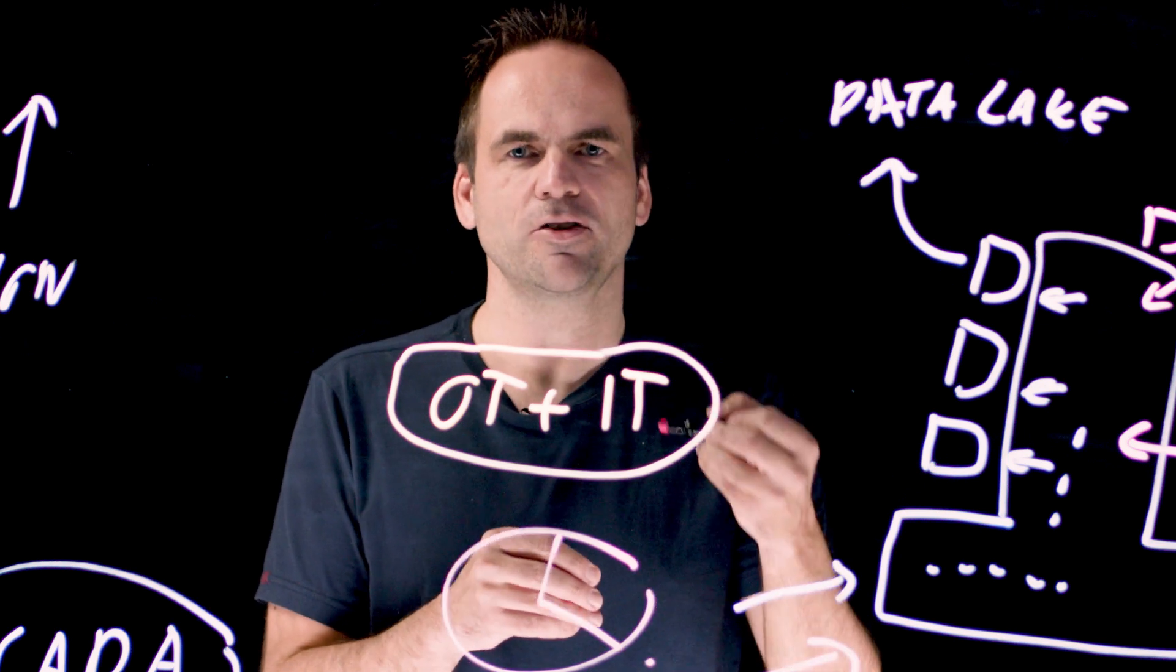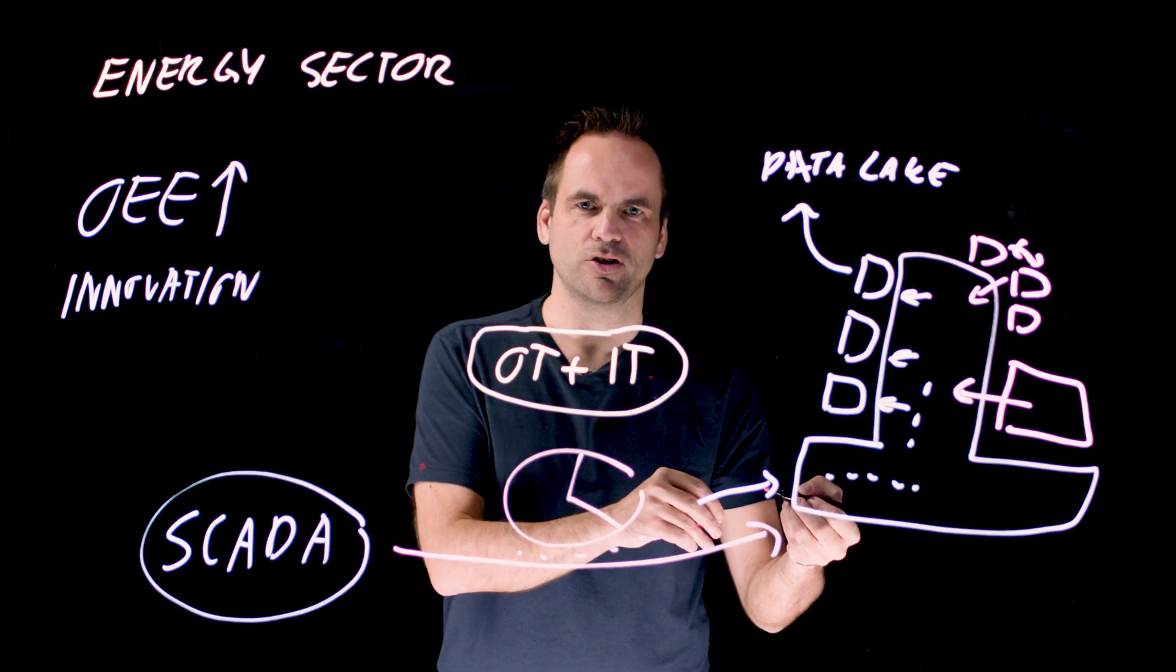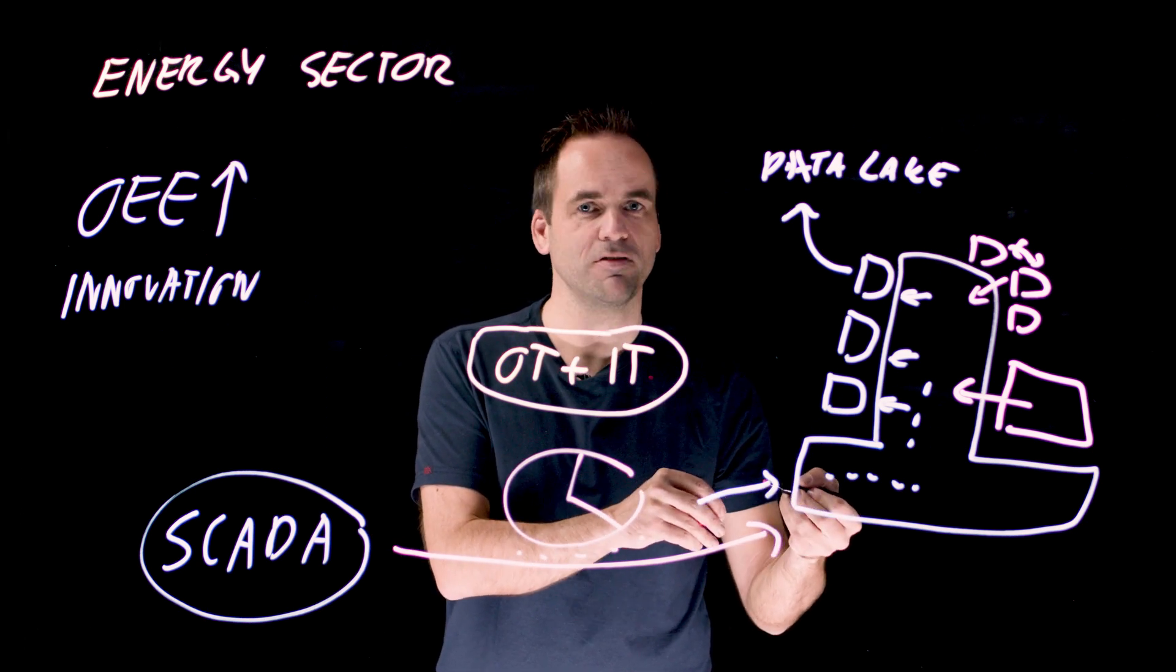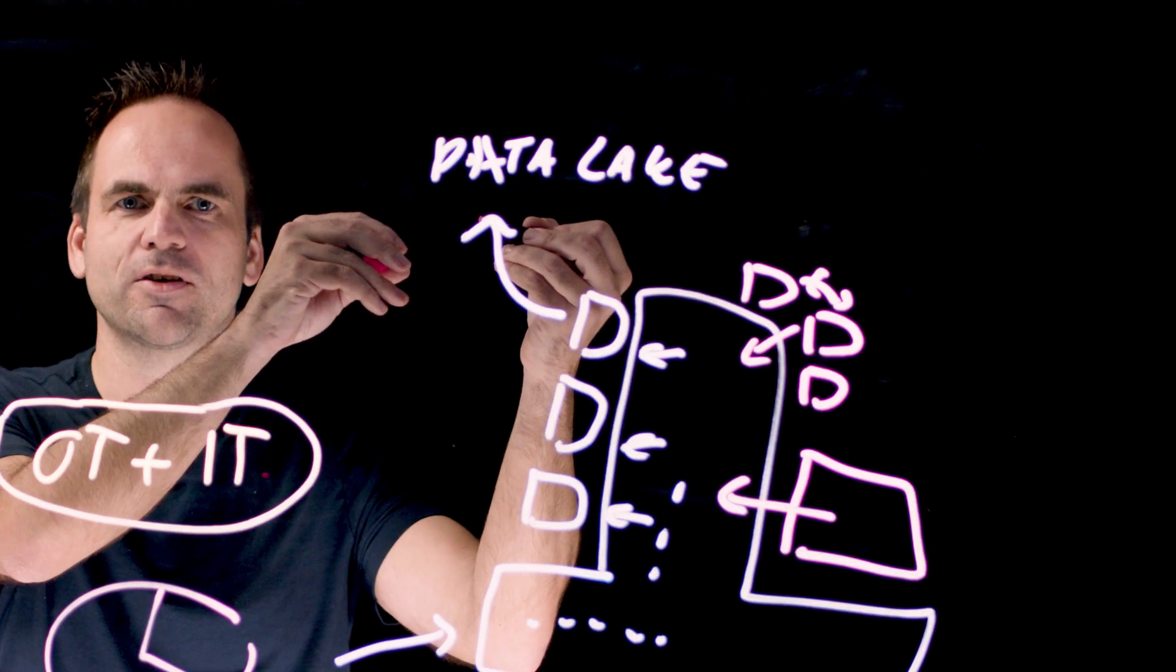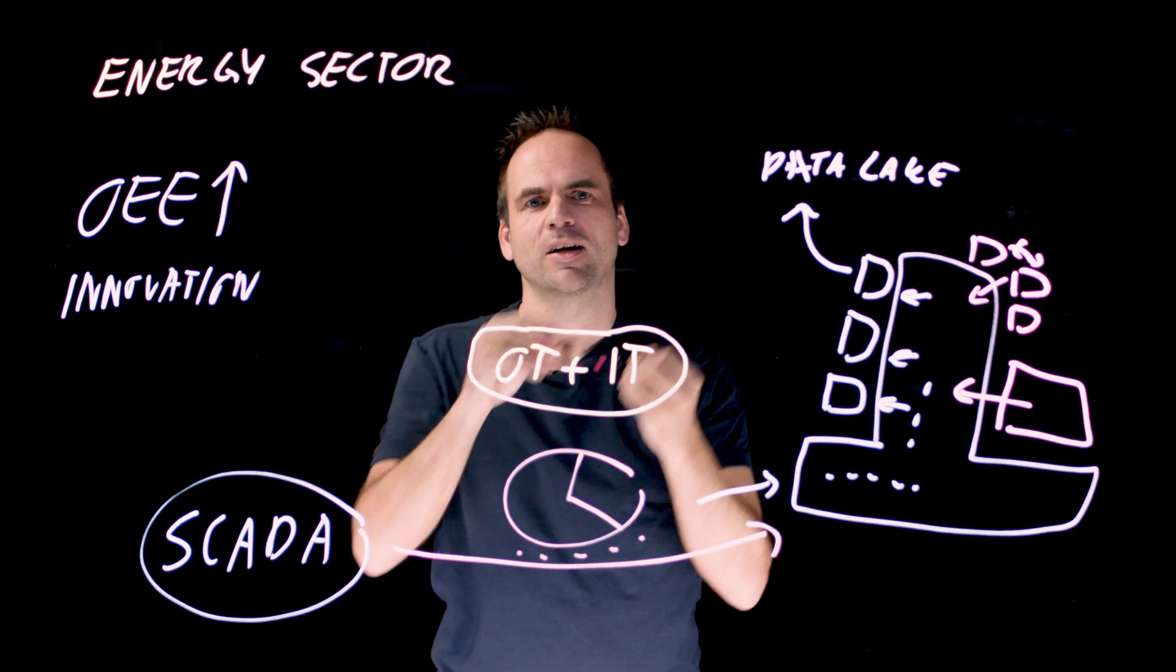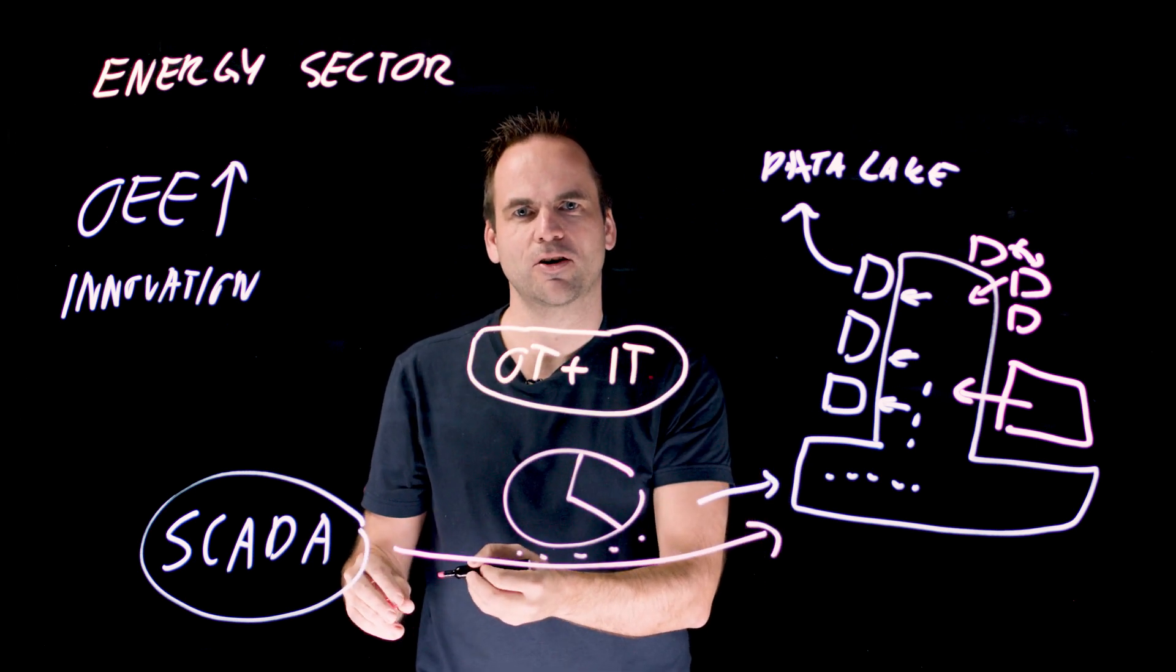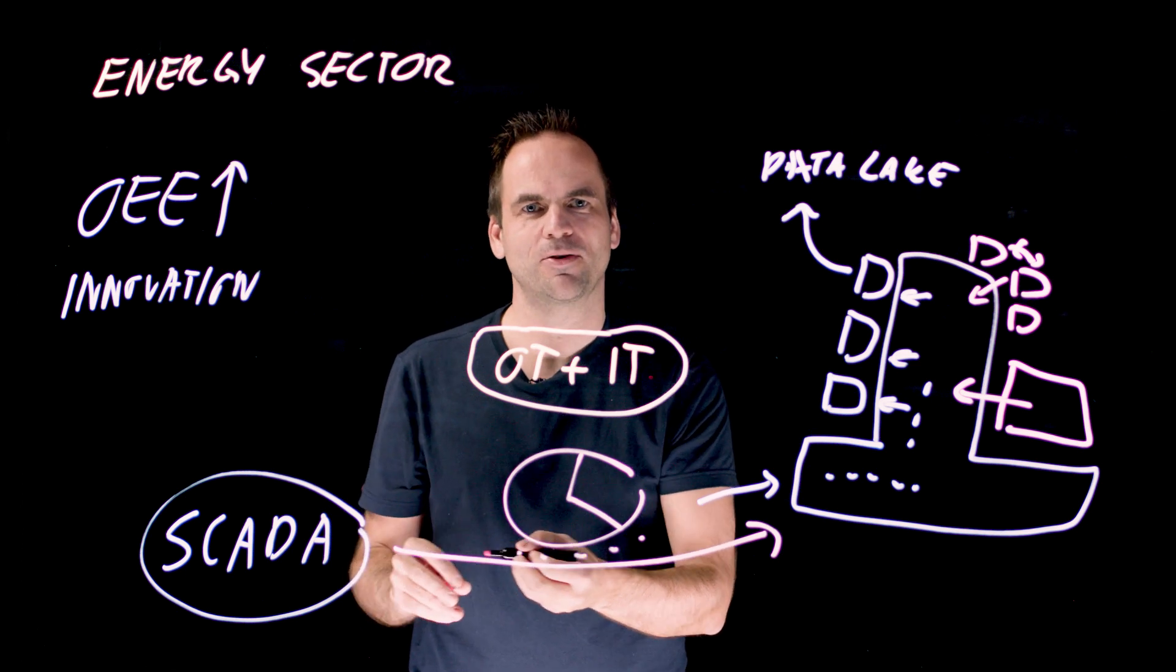And this can either run close to the edge in the OT infrastructure, even in a factory, or you do all of this new innovation in the cloud where it's fully managed and only connect that to your OT infrastructure like a robot or any other system. For example, with technologies like OPC UA or MQTT.